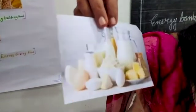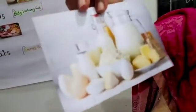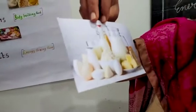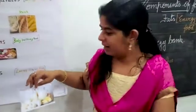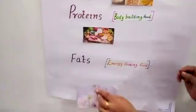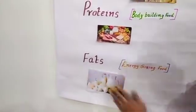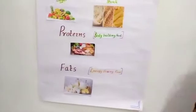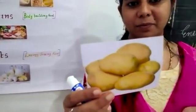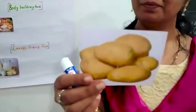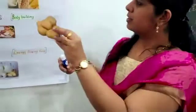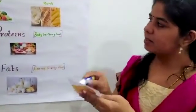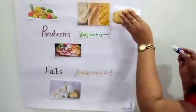Here you can see milk and milk products, egg, and oil. It is understood that it is coming under energy-giving food — that is fats. One more picture: potato. It is also an energy-giving food, it is starch-rich food. So we will stick it along with the starch category.